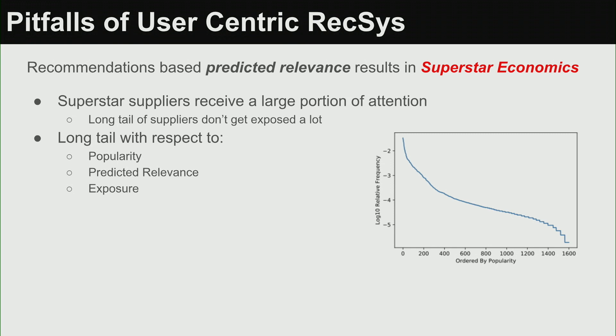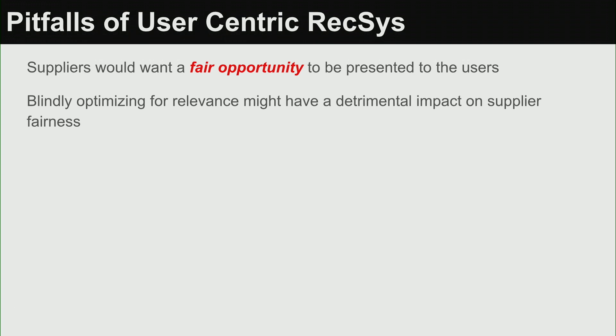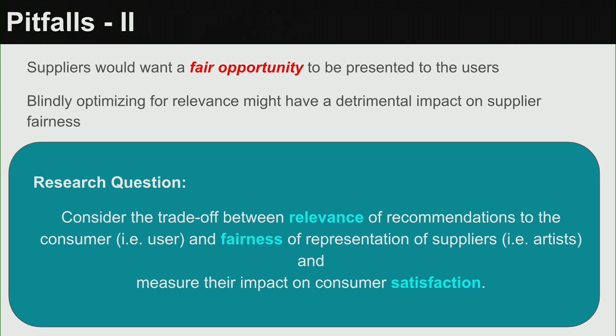A common pitfall of user-centric recommendations is that we recommend based on predicted relevance, resulting in skewed economics: some suppliers are super popular and there's a long tail with respect to popularity and exposure. Suppliers would want a fair opportunity to be presented to users. The idea is that blindly optimizing for relevance without taking into account fairness might hurt artists. This is true for all suppliers — in a marketplace, users are consumers and at Spotify, artists are the suppliers.